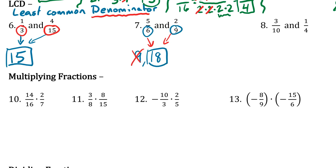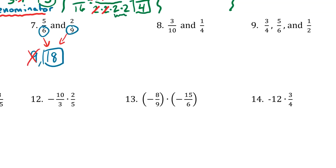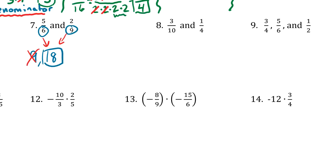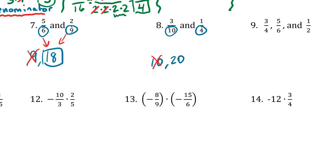Next: 3 tenths and 1 fourth. We're looking at denominators 10 and 4. The bigger one is 10, so we start there. Does 10 go into 10? Yes. Does 4 go into 10 evenly? No — so 10 is not the LCD. Our next number is 10 plus 10, which is 20. Does 10 go into 20? Yes. Does 4 go into 20? Yes, 4 times 5. Since both go into it, 20 is our LCD.